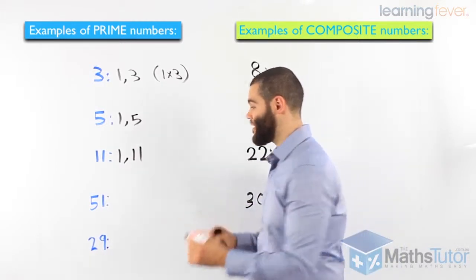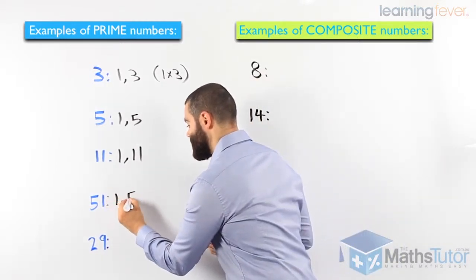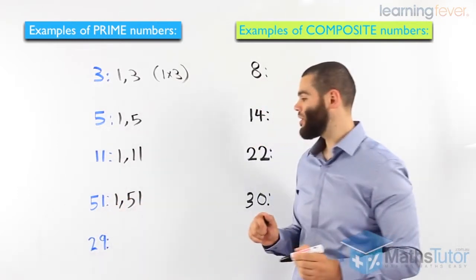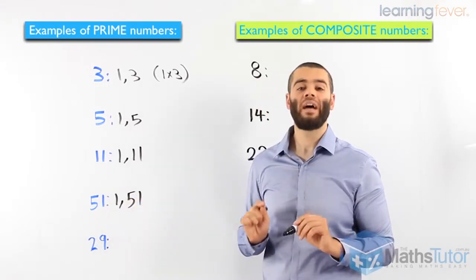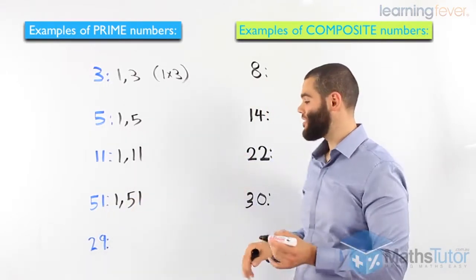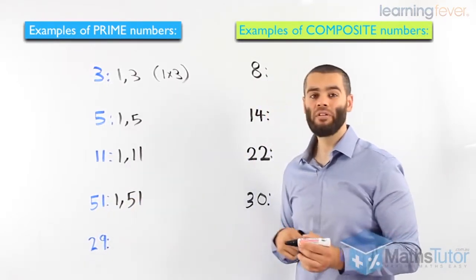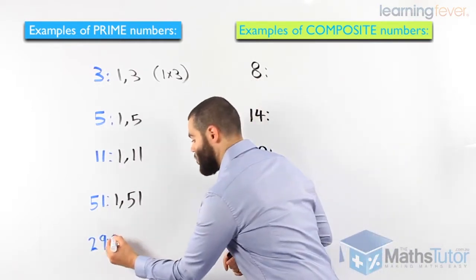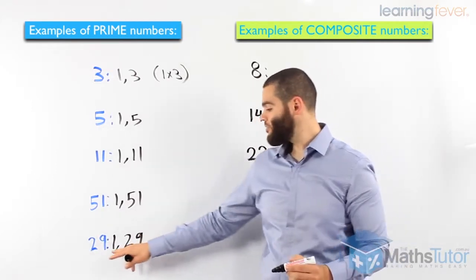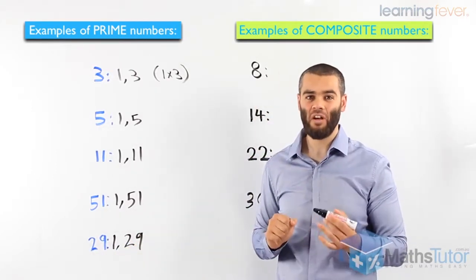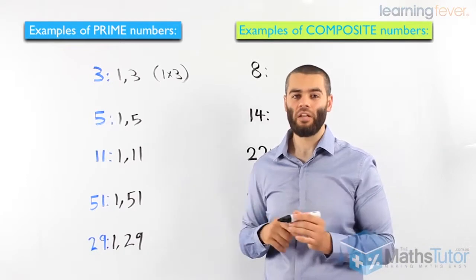51. Same thing. 1 times 51 is 51. Only 2 factors which make it a prime number. Another last example for the prime numbers. 29. 1 times 29. They are the only factors of 29. There are no other factors.